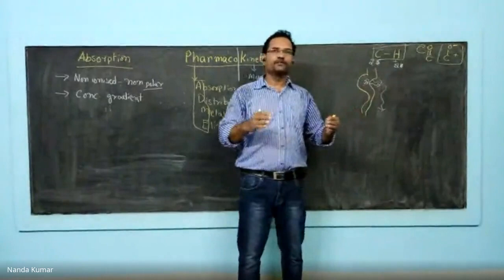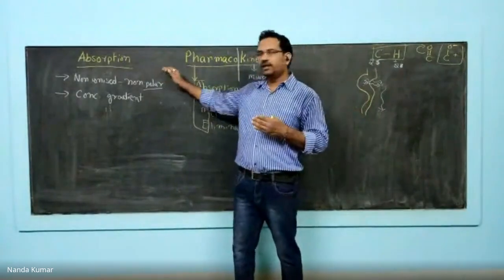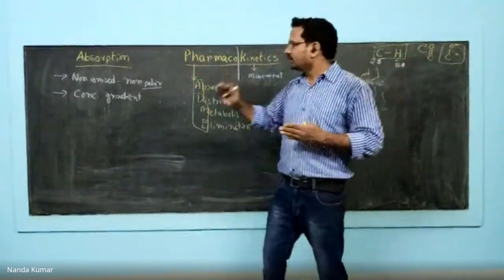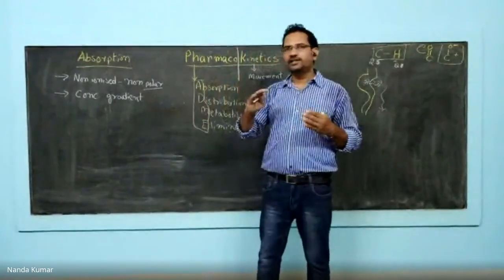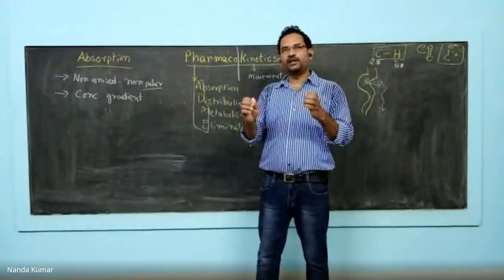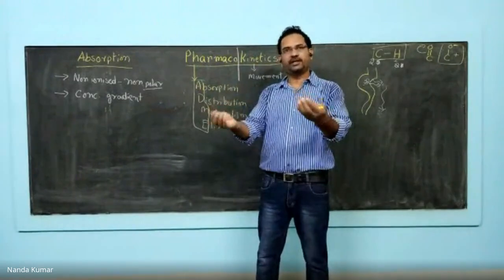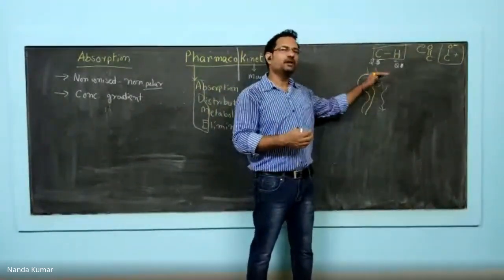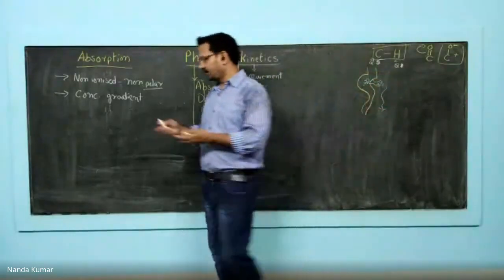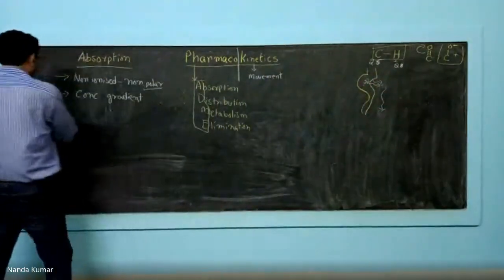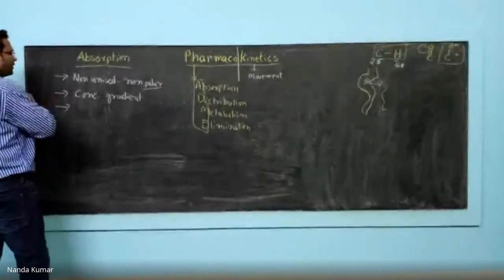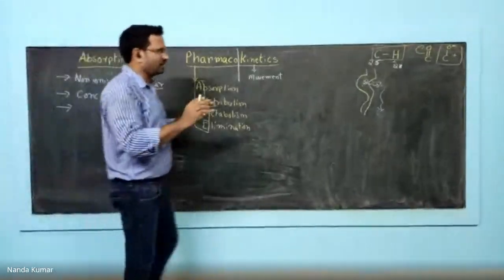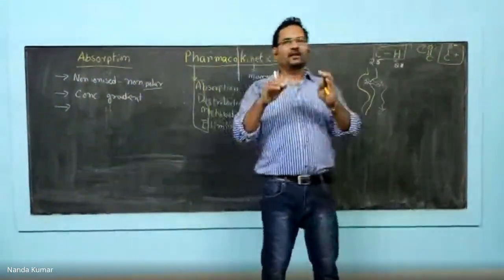So the first feature is that the drug should be non-polar and non-ionized. The second one is concentration gradient — this will be present with all drugs, because we initially take a drug with higher concentration and it gets absorbed through blood circulation.